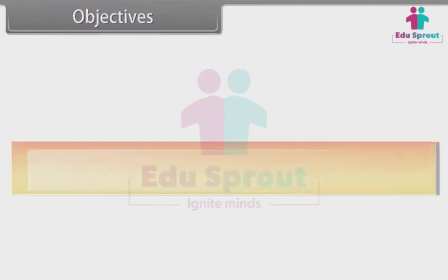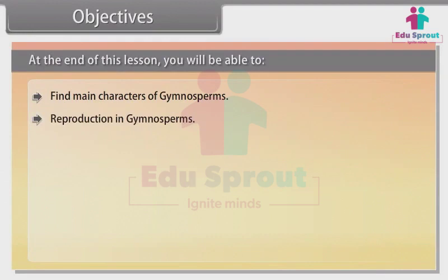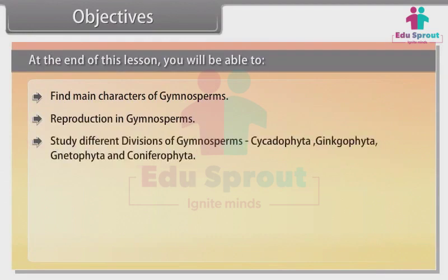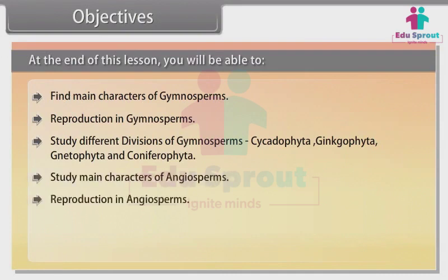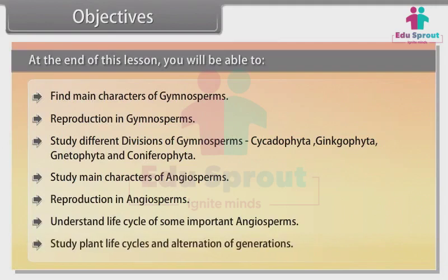Objectives. At the end of this lesson you will be able to: find main characters of Gymnosperms; understand reproduction in Gymnosperms; study different divisions of Gymnosperms — Cycadophyta, Ginkgophyta, Gnetophyta, and Coniferophyta; study main characters of Angiosperms; reproduction in Angiosperms; understand the life cycle of some important Angiosperms; and study plant life cycles and alternation of generations.